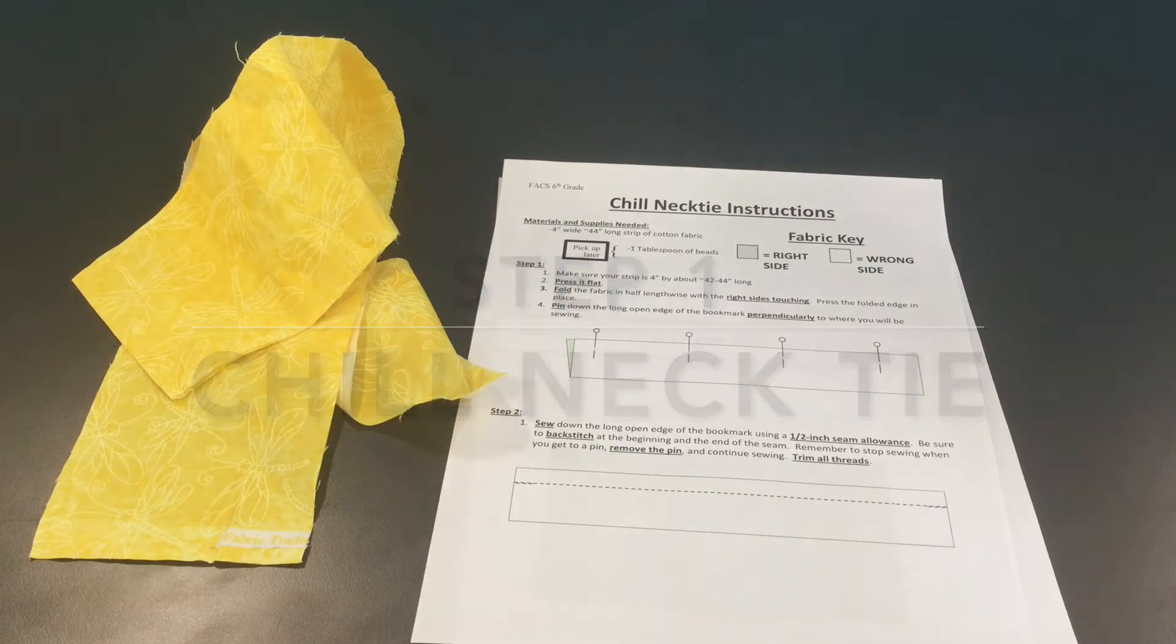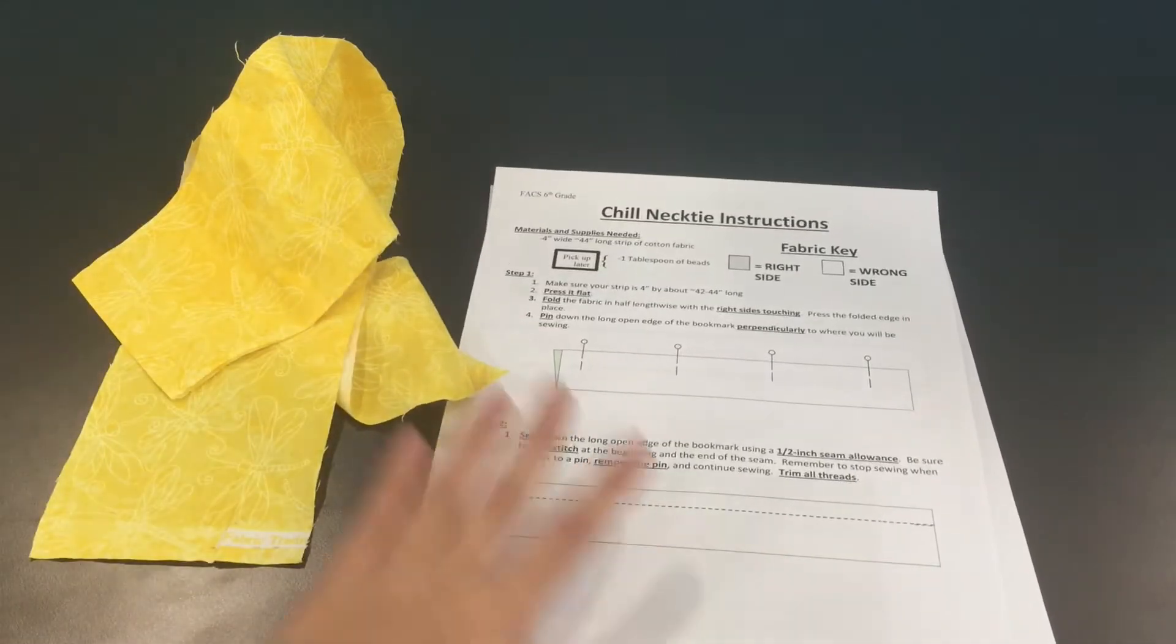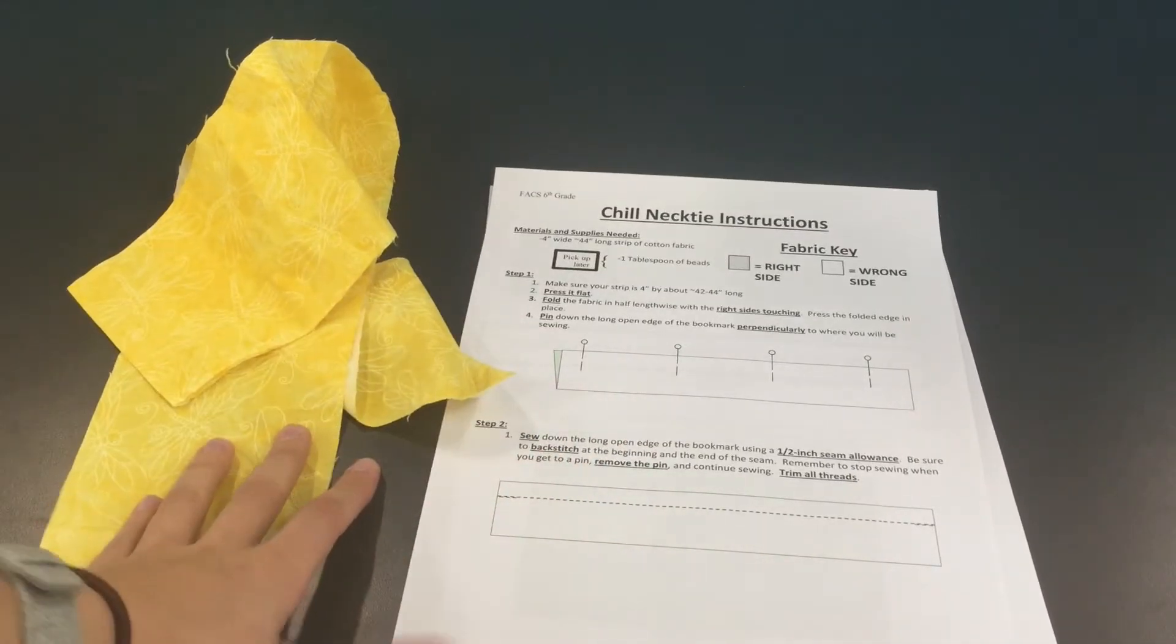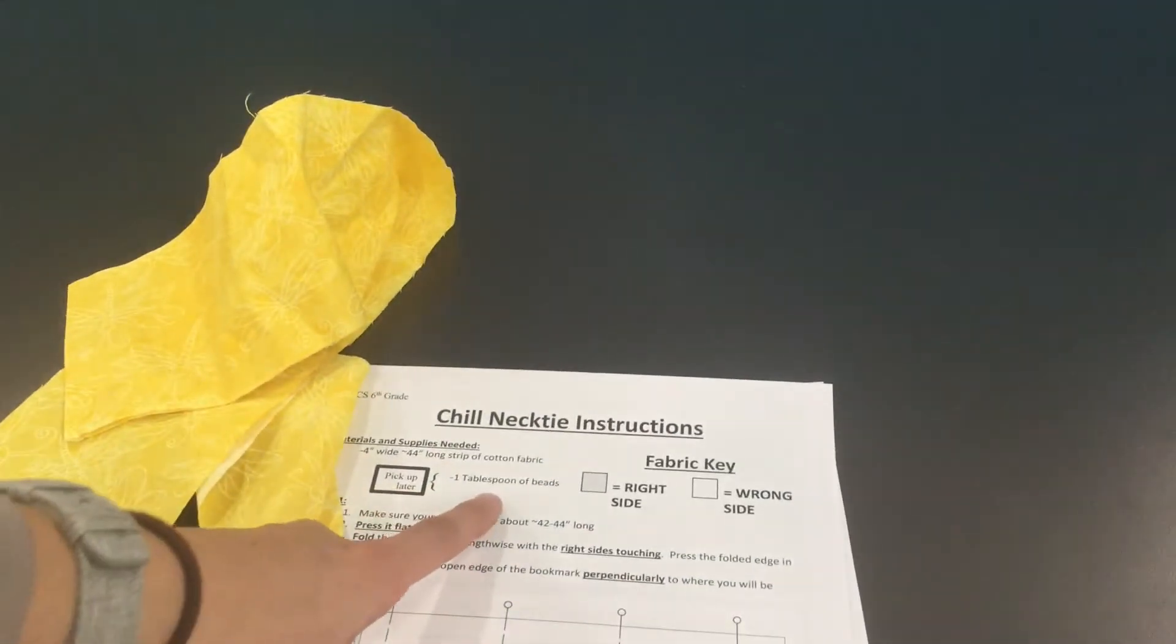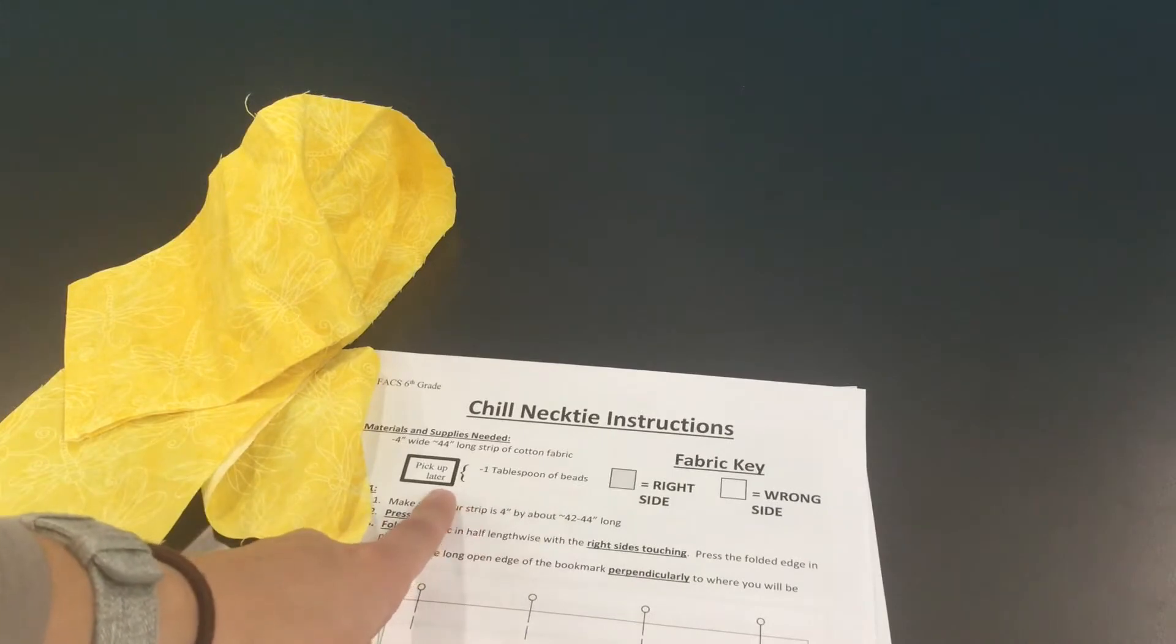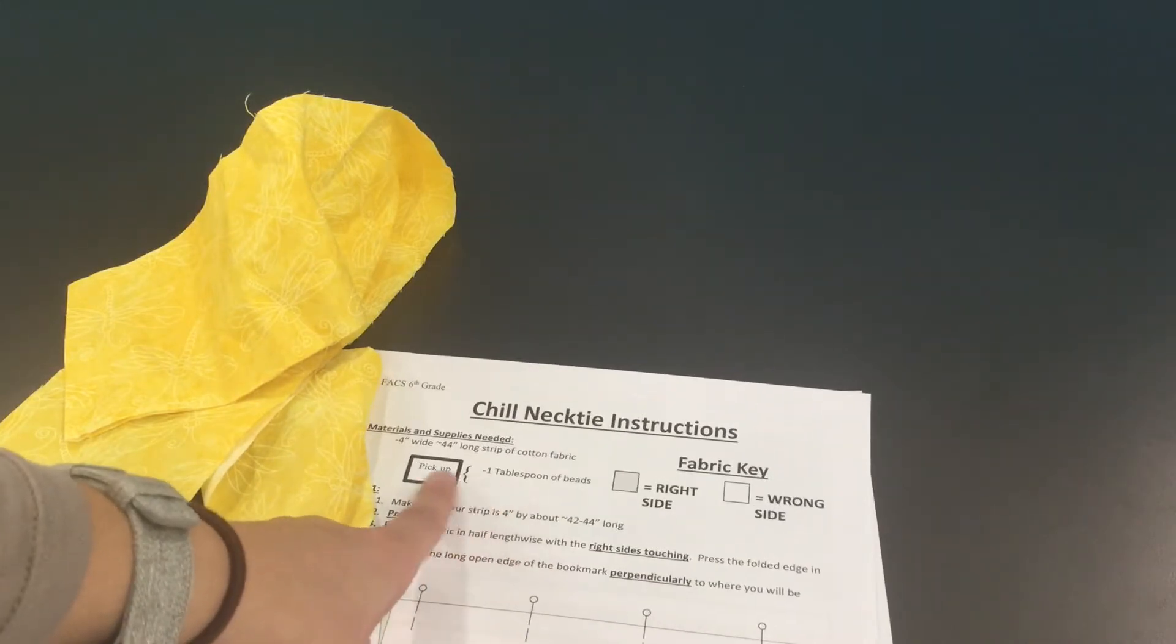Step one for sewing your chill necktie is: be prepared. Make sure you have your instructions and your fabric, and make sure you read them. Note on here it says that your tablespoon of beads—pick up later. You're only going to get these when you need them.